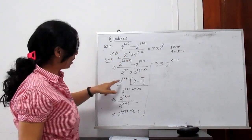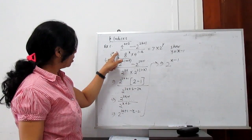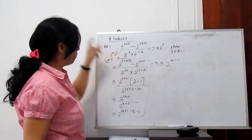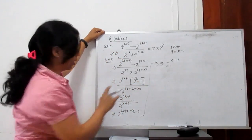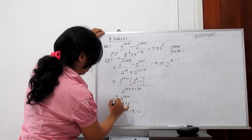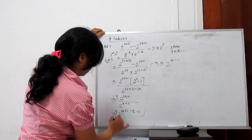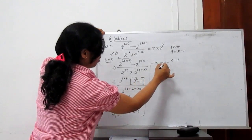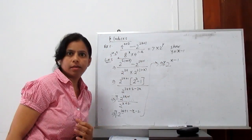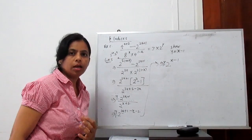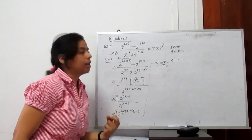If we take 2 to the power x plus 1 outside, then only 2 to the power 3 is left. 2 to the power 3 is 8. So 8 minus 1 is 7. The factor 7 appears in the simplification. This is the basic initial step where every student commonly makes an error, so be more focused when opening or multiplying indices.